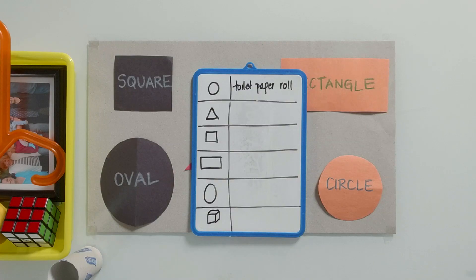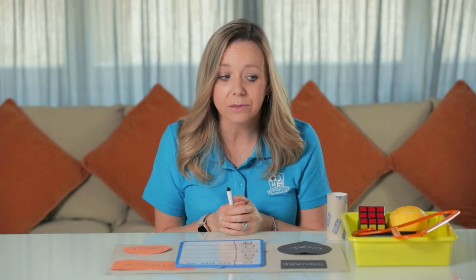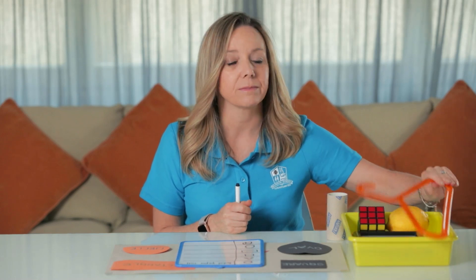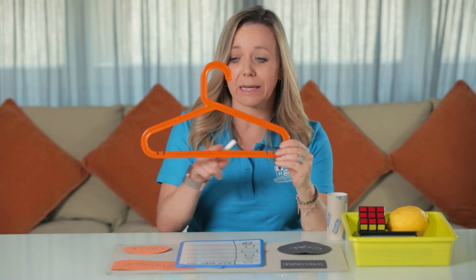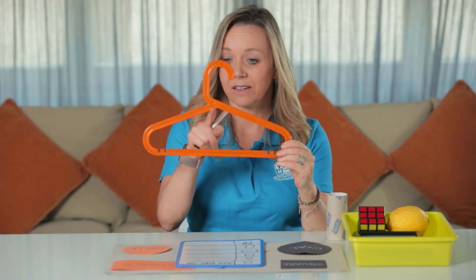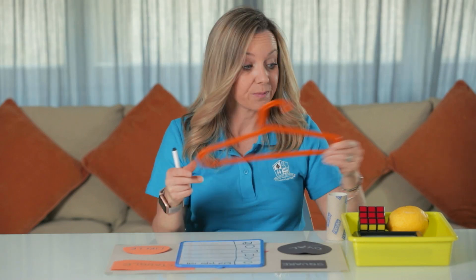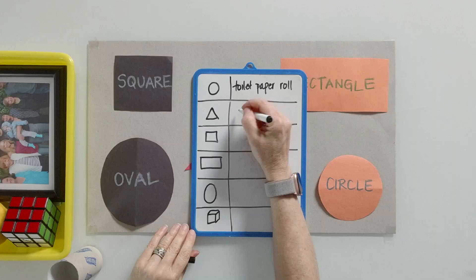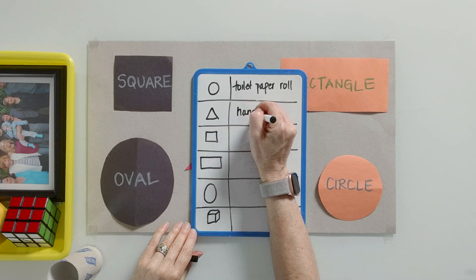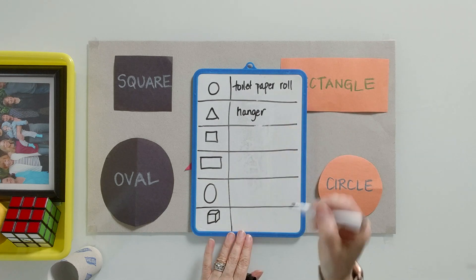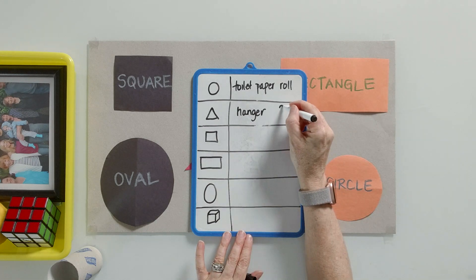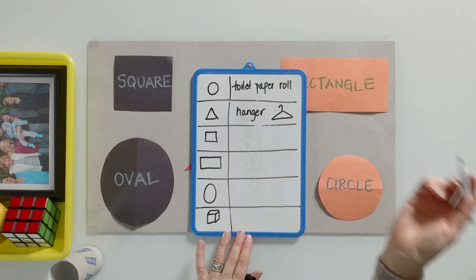Now we have a triangle. What could you find around your house that's a triangle? I looked around my house and I found a hanger. Now this isn't a perfect triangle, but it's pretty close — do you see inside? That could be your triangle. So I'm gonna write 'hanger.' If you don't have the help of your parent to write right now, then you can draw a picture of the hanger.